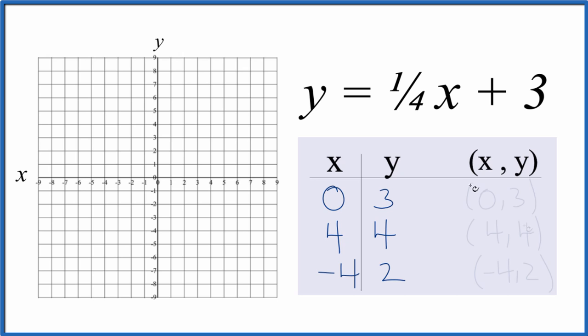So these are the points we'll graph for the equation y equals one-fourth x plus three. We go to zero for x, that's right here, and then y is three. We go up three.